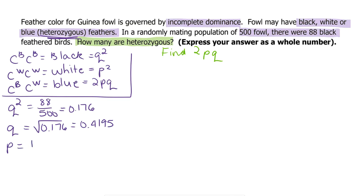P is 1 minus Q, so 1 minus 0.4195, which is 0.5805. And then 2PQ is 2 times 0.5805 times 0.4195 for a total of 0.4870.